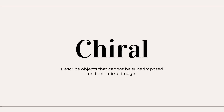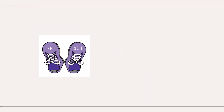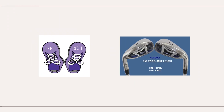The term chiral is used to describe objects that cannot be superimposed on their mirror image. Our left and right hands are chiral objects. Left and right shoes are chiral. Left and right-handed golf clubs are also chiral.